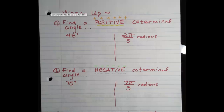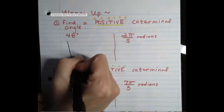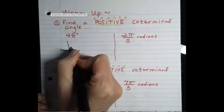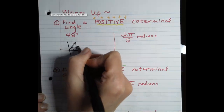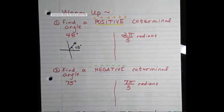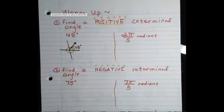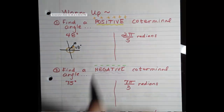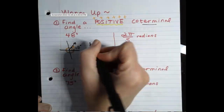Now that you have done it, let's give this a quick check. Remember, coterminal angles are angles that terminate at the same location on the coordinate plane. To start both of these, I'm just going to draw a quick diagram of the rotation. We're always going to be adding 360 or subtracting 360.